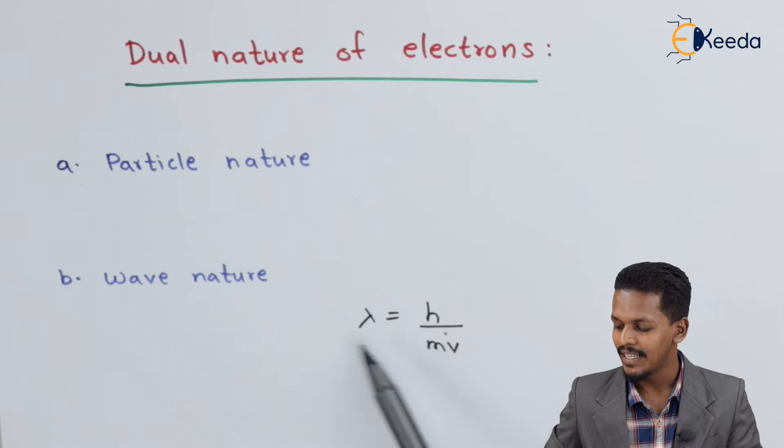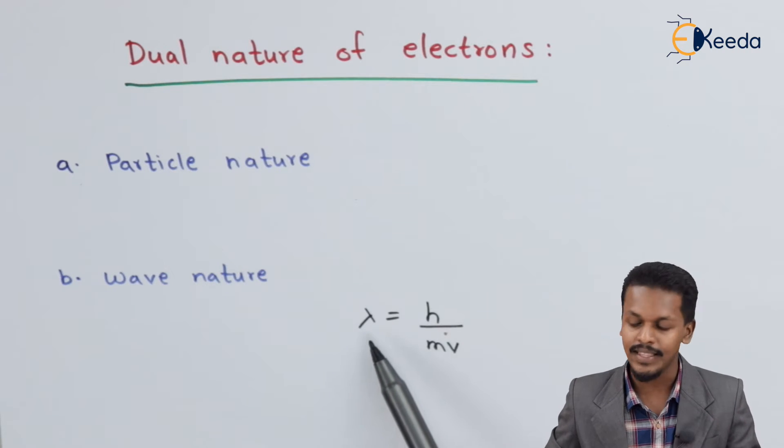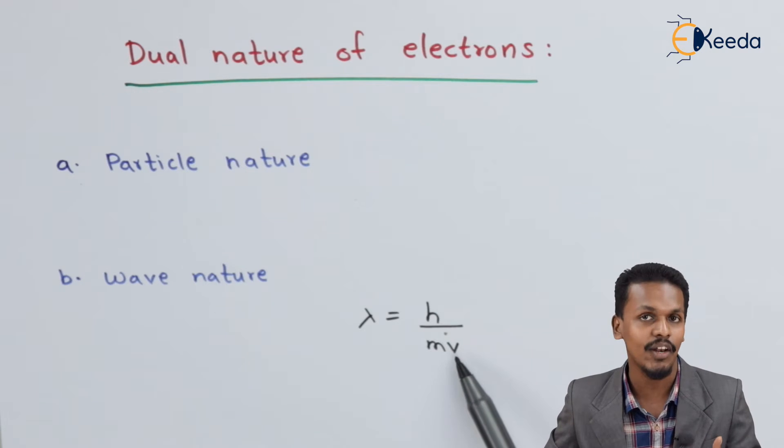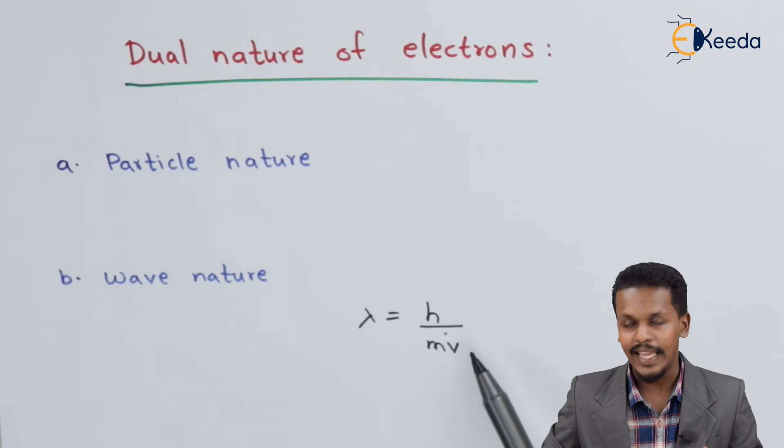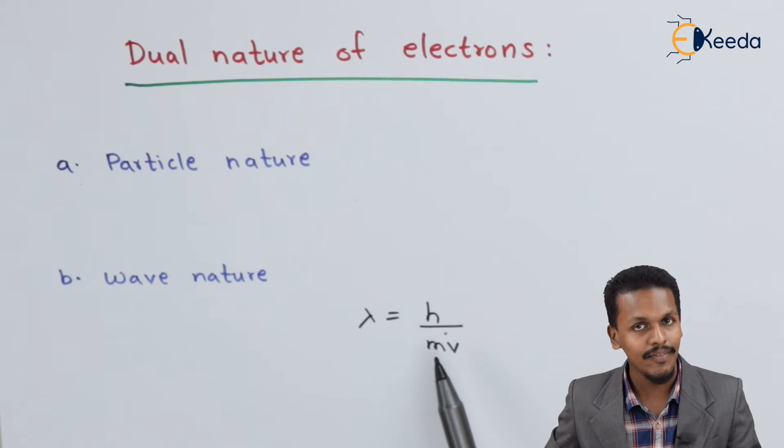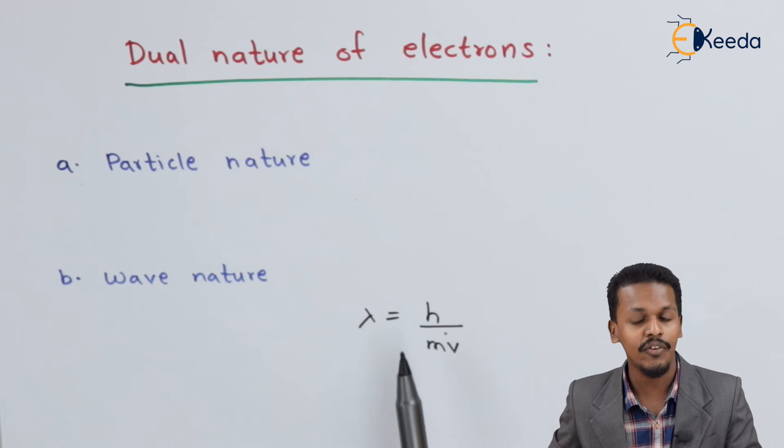So here basically, lambda is nothing but the wavelength. This H is Planck's constant, M is the mass of the electron, and V is the velocity. So this electron's characteristic to behave like a wave can be explained with the help of the de Broglie equation.